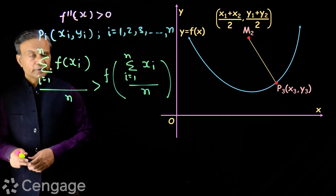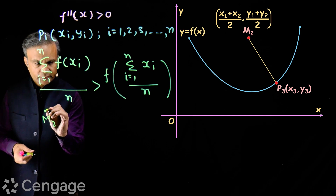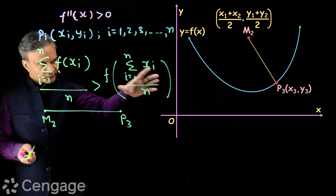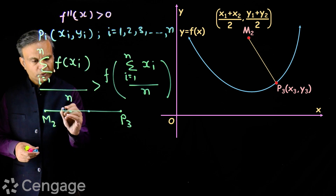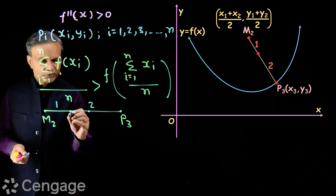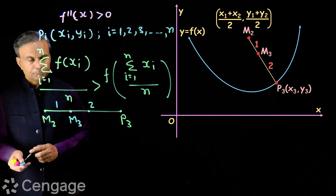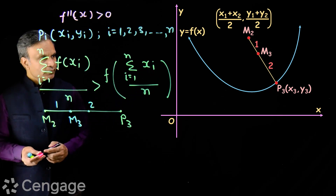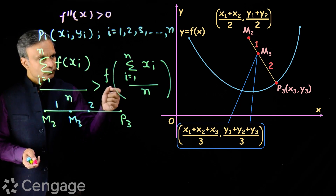Then we consider point P3 on the curve having coordinates (x3, y3). Now we look at point M2 and point P3 — we join these two points, and on this join we consider a point which divides M2P3 in the ratio 1 to 2. This new point is M3.